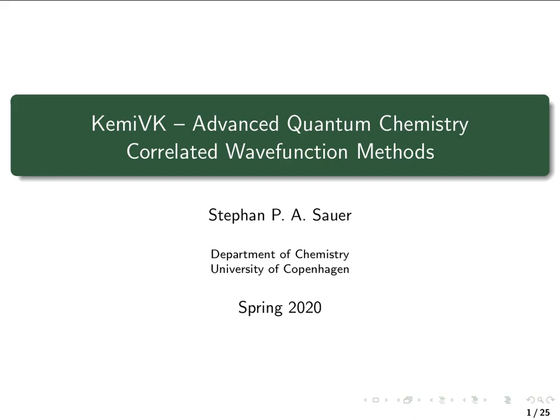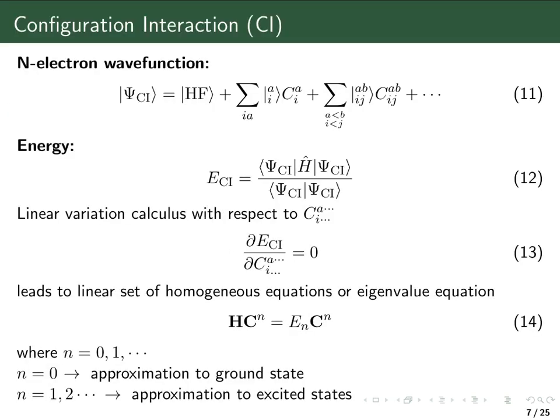Welcome to Advanced Quantum Chemistry and my second lecture on correlated wave function methods. In my first lecture, I discussed that the exact wave function — meaning the solution to the Schrödinger equation — can be written as a linear combination of all the Slater determinants which can be generated from a complete one-electron basis set. One way of determining these expansion coefficients is to use the variational principle, which is precisely what one does in a method called configuration interaction.